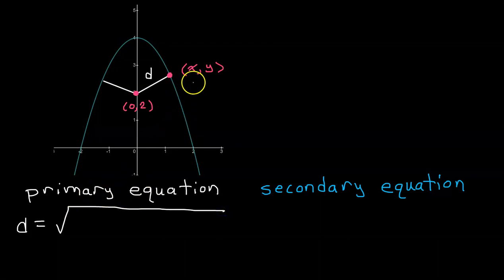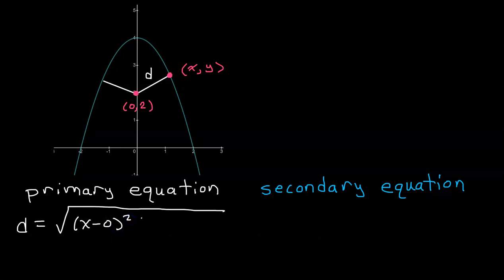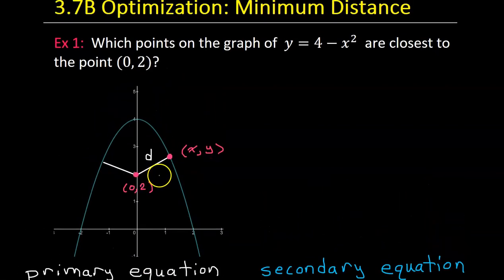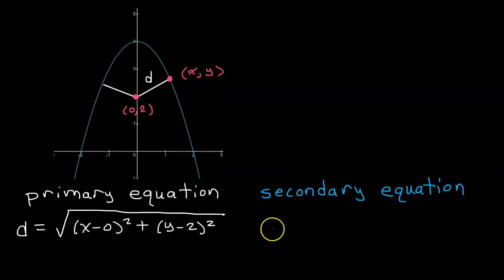So the distance formula is the square root of (x₁ minus x₂) squared plus (y₁ minus y₂) squared. In this case that is going to be the square root of (x minus 0) squared plus (y minus 2) squared. So there is the primary equation. The secondary equation is the equation of the parabola itself: y equals 4 minus x squared.